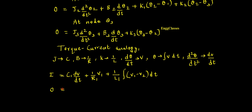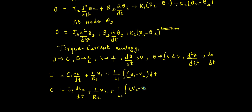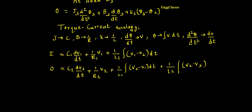At node 2, applying the analogy: 0 = c2 · (dv2/dt) + (1/r2) · v2 + (1/l1) · ∫(v2 − v1) dt + (1/l2) · ∫(v2 − v3) dt.